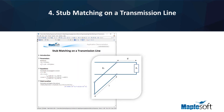4. Stub matching on a transmission line. RF and microwave engineers often need to match a load to the impedance of a transmission line. This is known as stub matching and involves numerically solving a non-linear set of equations. This needs strong numeric solvers, as are found in Maple, and supersedes traditional approaches using Smith charts. The parameters in these problems usually have dimensions — for example, resistances are in ohms and distances are in meters. Maple can carry units from parameter definitions through the numeric solution of equations and into the results.